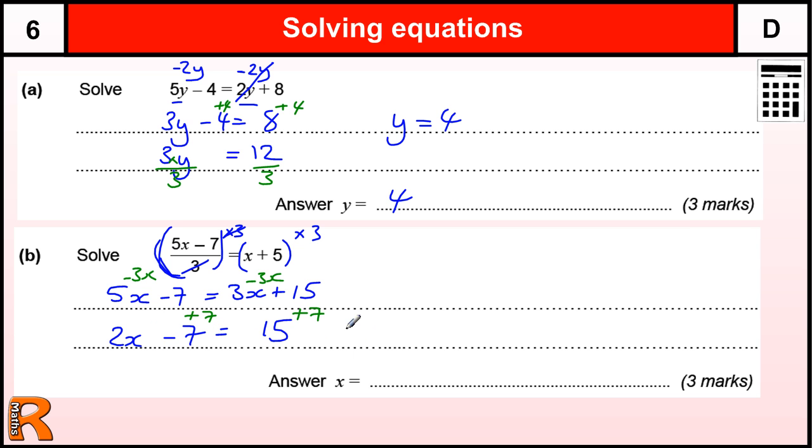So that leaves us with 2x, the 7's gone, and 15 plus 7 is 22. And now we're just going to divide by the 2 on both sides. And that leaves us with x equals 11.